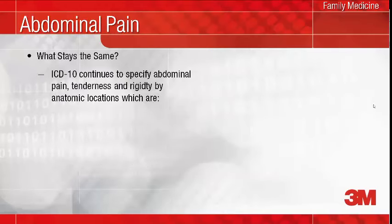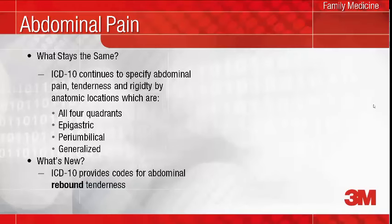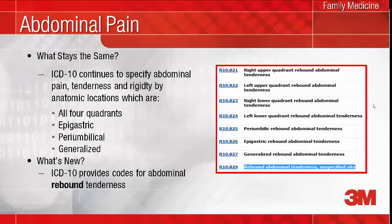ICD-10 continues to specify abdominal pain, abdominal tenderness, and abdominal rigidity by anatomic location — all four quadrants, epigastric and periumbilical, as well as generalized. What's new is that ICD-10 provides specific codes for abdominal rebound tenderness by anatomic location. The takeaway here is to remember to document in your note the specific location of the abdomen for these symptoms. Providing more specific symptoms will help support medical necessity for any diagnostic tests you may order in an effort to learn the cause of this common symptom.